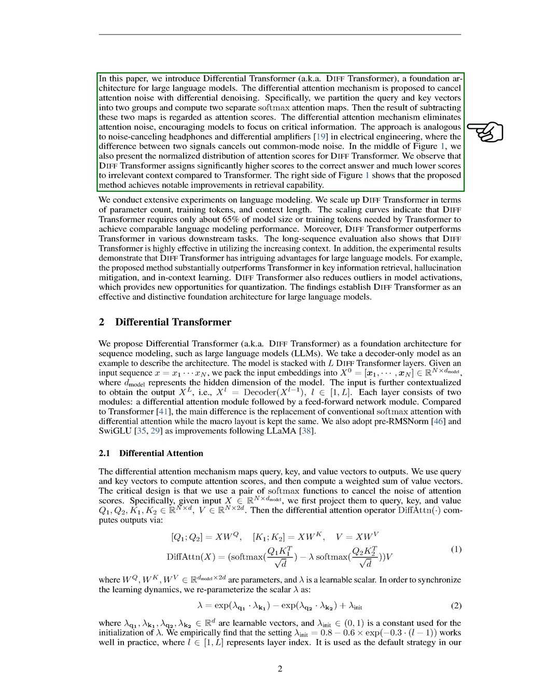To address this, we introduce the differential transformer, or DIF transformer, as a foundational architecture for LLMs. Our approach involves cancelling out attention noise through a denoising process. We split the query and key vectors into two groups and compute two separate attention maps. By subtracting one map from the other, we obtain refined attention scores that help the model concentrate on essential information. This method is similar to how noise-canceling headphones work, where the difference between two signals eliminates background noise.